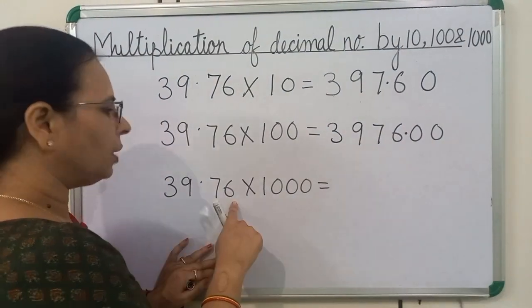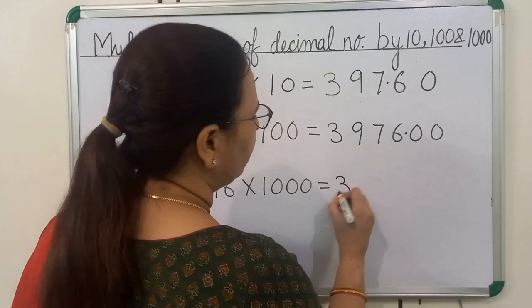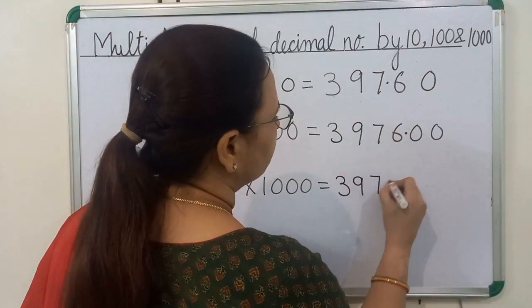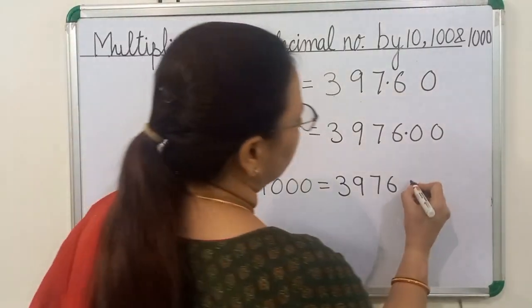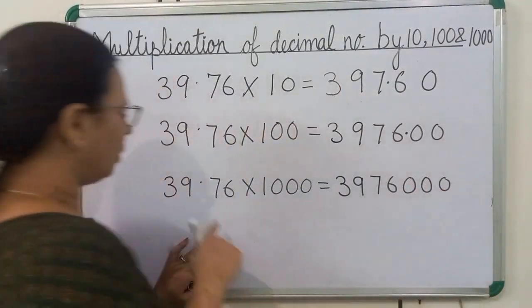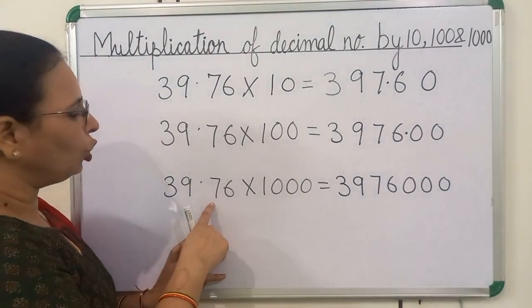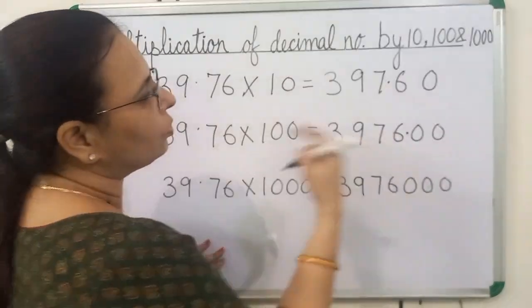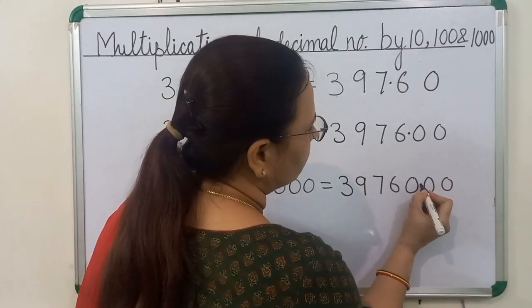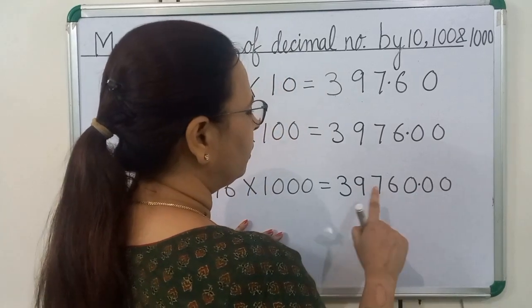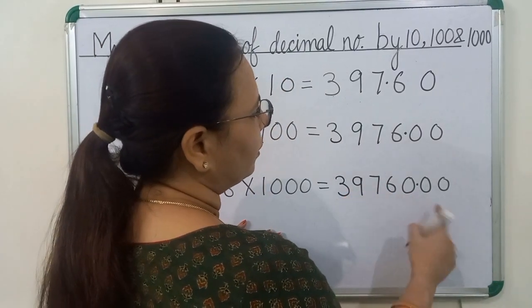Now we will multiply the same number by 1000. We will get 3976, and 1000 has 3 zeros, so we will write here 3 zeros. In the question, the decimal point is before 2 digits, so in the answer also we will put the decimal point before 2 digits. So we will get the answer 39,760.